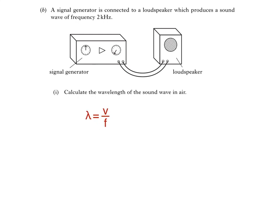The speed of sound in air, which you'll find in the datasheet, is 340 meters per second, and we'll need to remember to convert frequency from kHz to Hz. That gives us 340 divided by 2 times 10 to the power of 3, which is 0.17 meters.